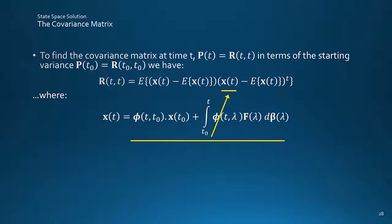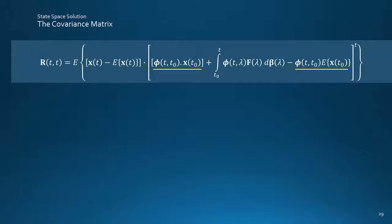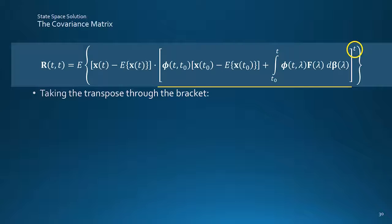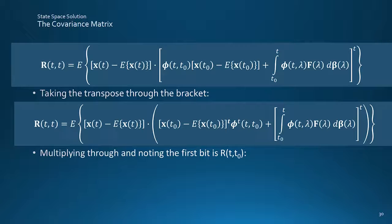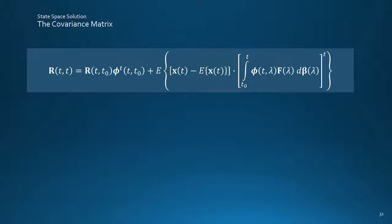Concentrating on the second bracket, the solution can, as before, be plugged in for X of T, along with the previous result for the mean value, to give this. The two terms in phi and XT0 can be pushed together, enabling us to factor out the STM as before. Then taking the transposes into the second bracket gives this. We can multiply the first XT expected XT bracket through, while identifying and pulling out the first chunk as a covariance R between times T and T0.